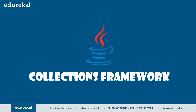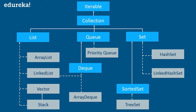A Java collections framework provides an architecture to store and manipulate a group of objects, and it includes interfaces, classes, and algorithms. In this figure, the blue boxes refer to the different interfaces and the gray color rectangles define the classes. Here, List is an interface, and ArrayList, LinkedList, and Vector are all classes that implement List as an interface.